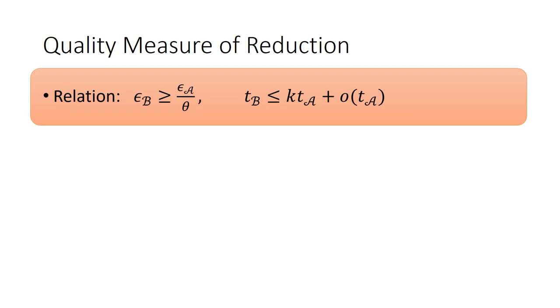To evaluate how tight the security of the crypto scheme is with respect to the hardness of the underlying problem, we establish bounds in the form epsilon_B is larger than epsilon_A divided by theta, and T_B is smaller than k times T_A plus small o(T_A). And then use k times theta as a measure of tightness.